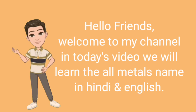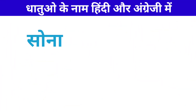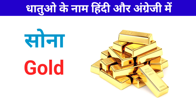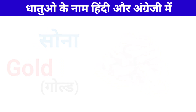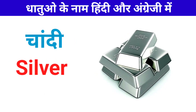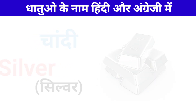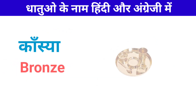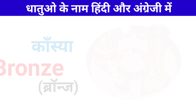Sona — Sona ko English me Gold kaha jata hai: Gold. Chandhi — Chandhi ko English me Silver kaha jata hai: Silver. Karsia — Karsia ko English me Bronze kaha jata hai: Bronze.